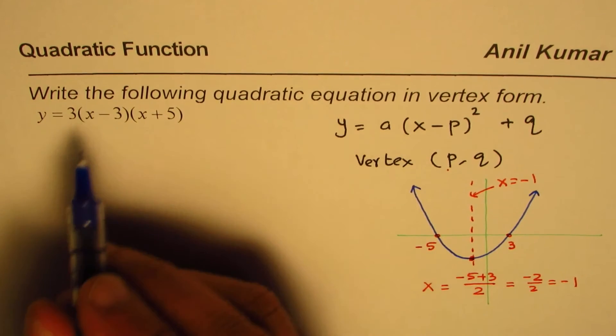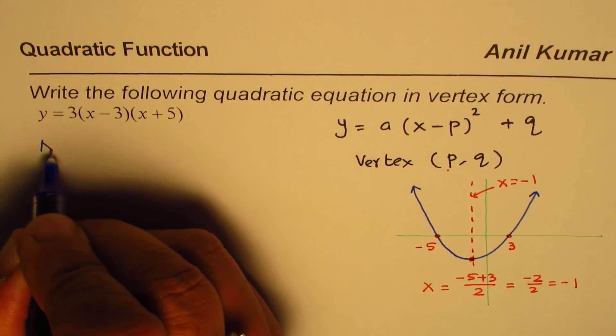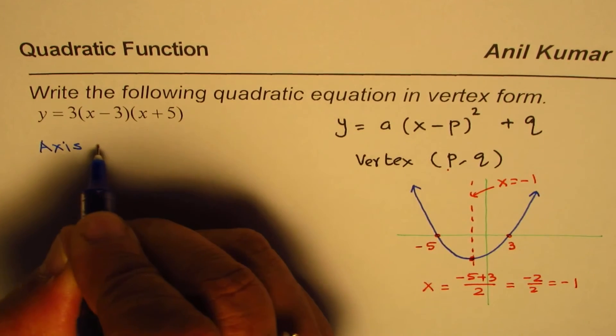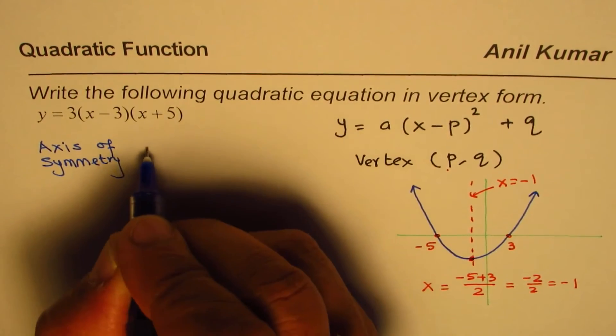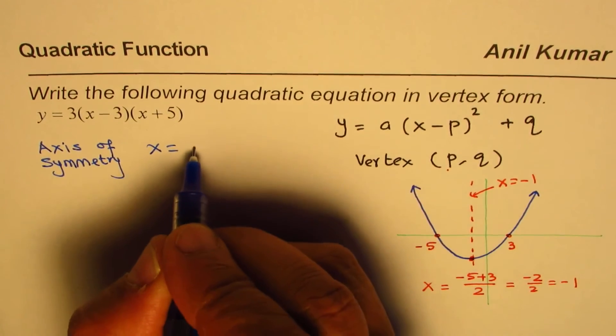So let's apply this technique here. From here what we know is that the axis of symmetry is at x equals minus 1. Now the vertex will lie on the axis of symmetry, so let's find that value.